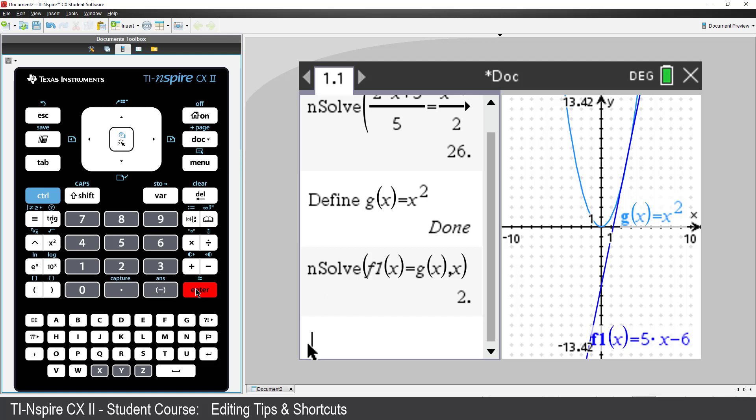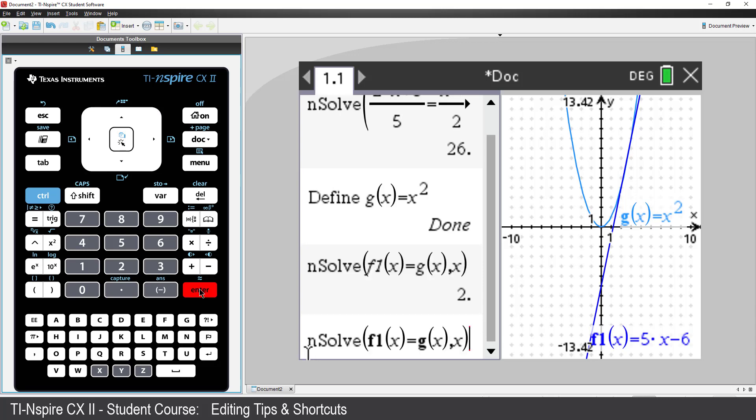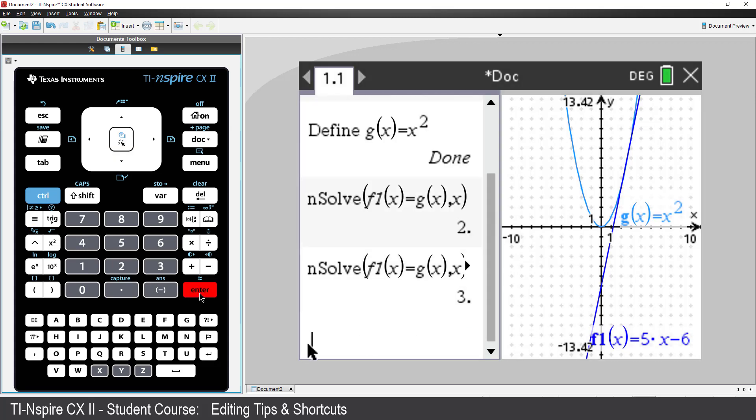Another great editing tip is to copy and paste. I'll arrow up to the previous command. I could press CTRL-C to copy and CTRL-V to paste, but in this environment, I can be even more efficient and just press Enter on the previous command. The second solution seems to be to the right of 2, so I can put in a domain constraint to say, given that X is greater than 2. Then press Enter. So X equals 3 is another solution.